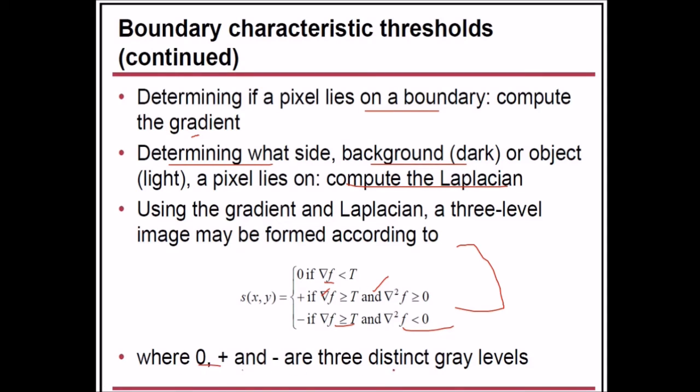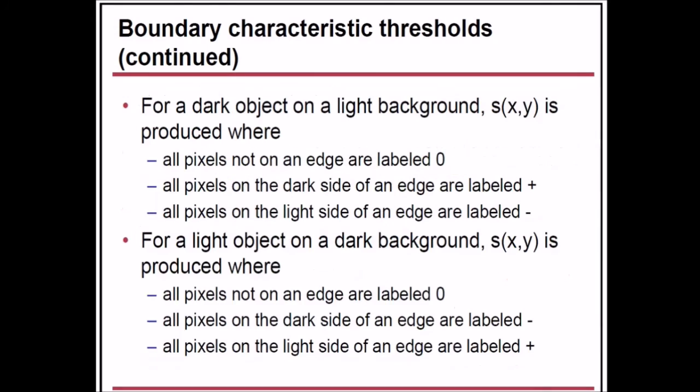Where 0, plus, and minus are three distinct gray levels. For a dark object on a light background, s(x,y) is the produced image where all pixels not on an edge are labeled 0, and all pixels on the light side of an edge are labeled negative.